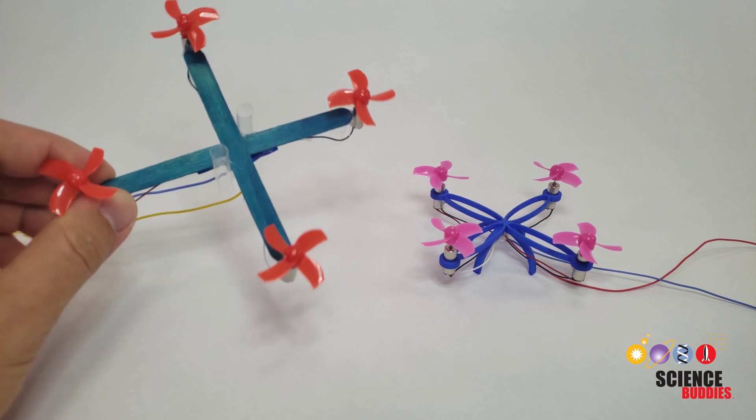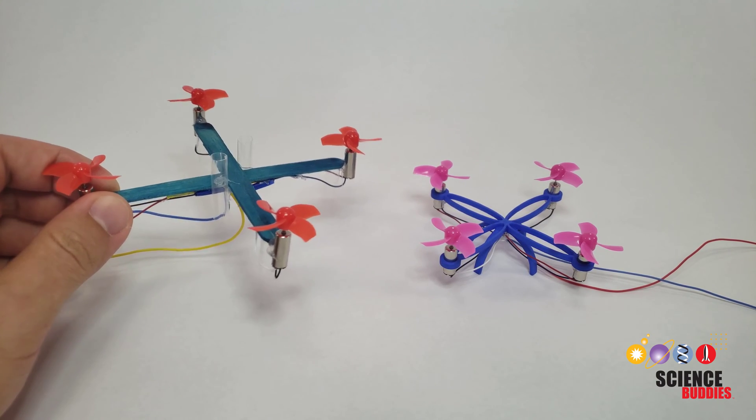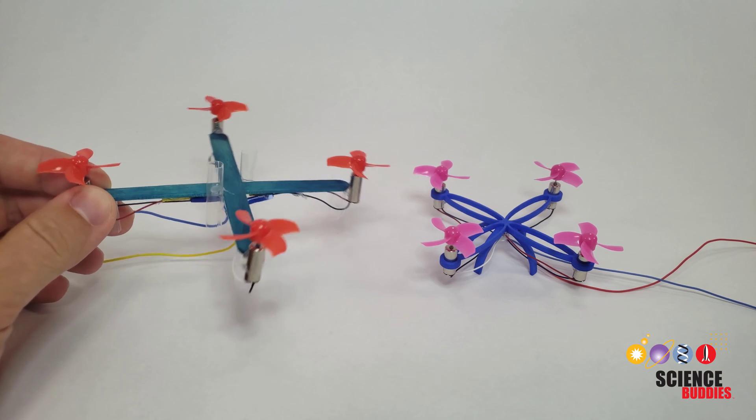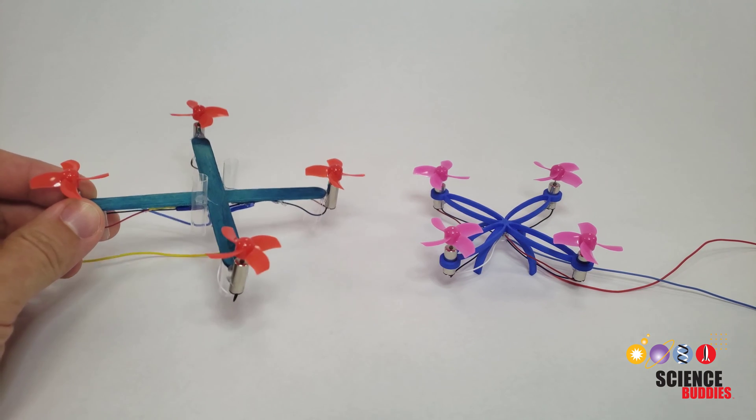The Science Buddies DIY Mini Drone Project shows you how to build a miniature drone with popsicle sticks and straws for the frame, also called the chassis.